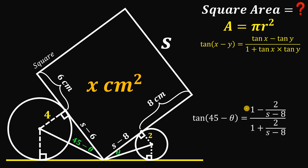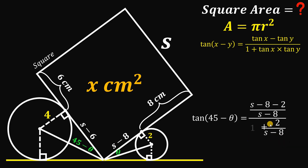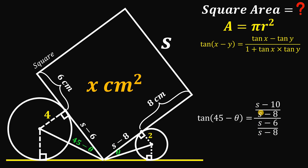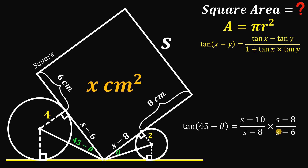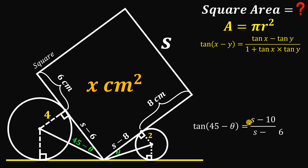Simplifying the numerator: (s − 8) − 2 = s − 10. Simplifying the denominator: (s − 8) + 2 = s − 6. Dividing, the (s − 8) factors cancel, giving tan(45° − θ) = (s − 10) / (s − 6).